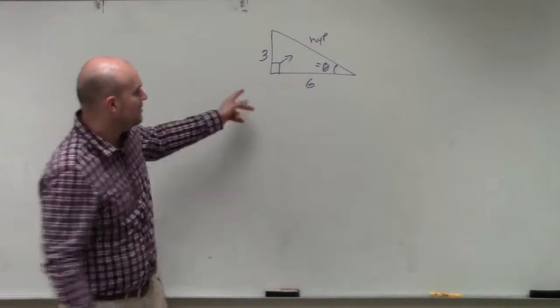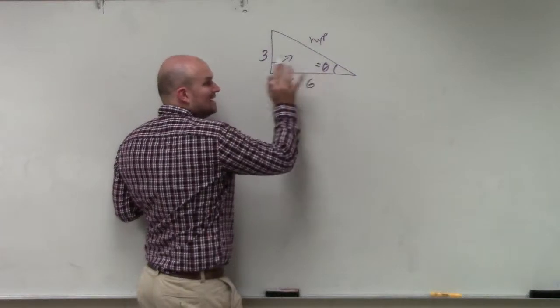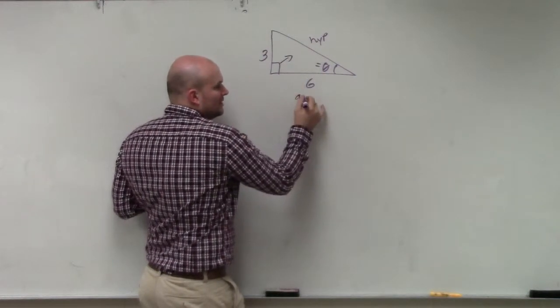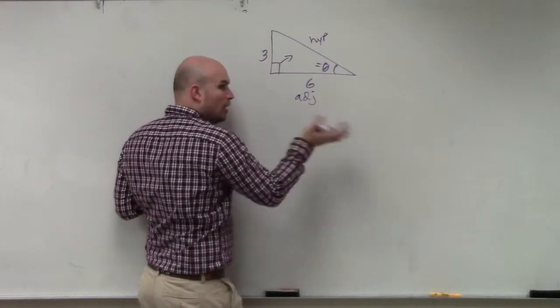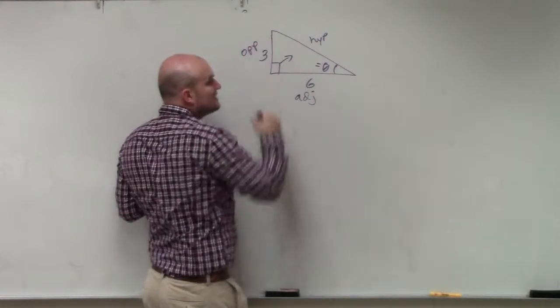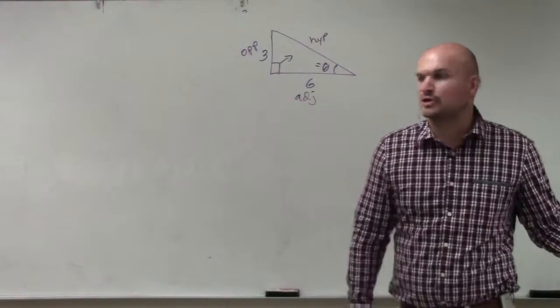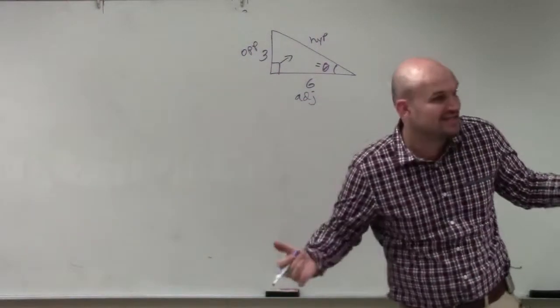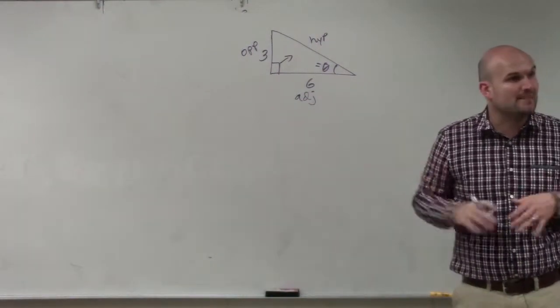I notice that the side length between my angle and the 90 degree angle is my adjacent side, always. So if that's adjacent, that's hypotenuse, that means this side is opposite. So going back to my sheet of paper, we look at it and say, what is the only trigonometric function that deals with opposite and adjacent?